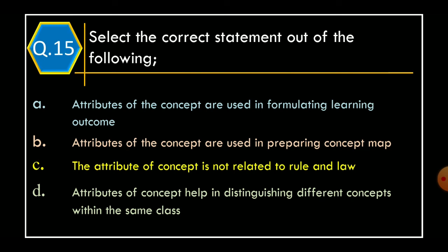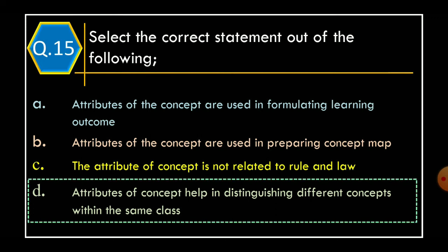Question 15: Select the correct statement out of the following. Option A: Attributes of the Concepts are used in Formulating Learning Outcome; Option B: Attributes of the Concepts are used in Preparing Concept Map; Option C: Attributes of the Concepts are not related to Rule and Law; Option D: Attributes of the Concepts help in distinguishing different concepts within the same class. The correct option is Option D: Attributes of the Concepts help in distinguishing different concepts within the same class.